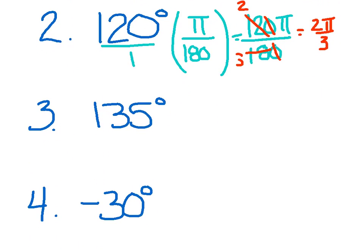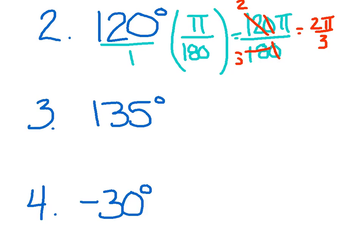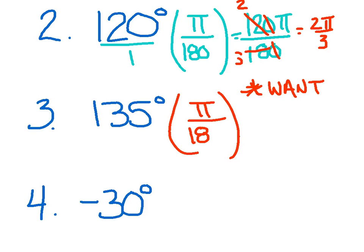Now, in case you ever forget what to multiply by, let me just give you this little hint. What you want goes on top. So let's make a little note there. What you want goes on top. So if you want radians, then you want to see the pi on top. If you want degrees, you want to see the degree on top.